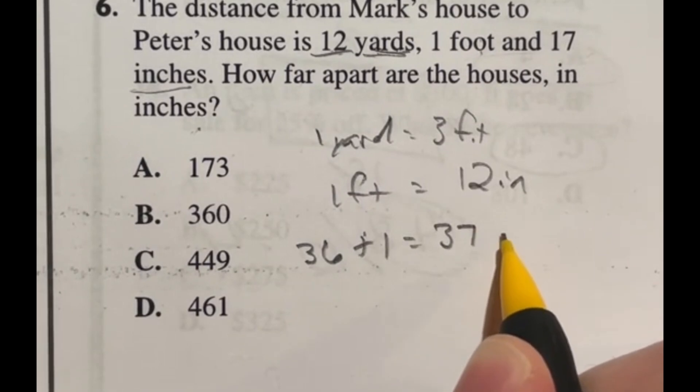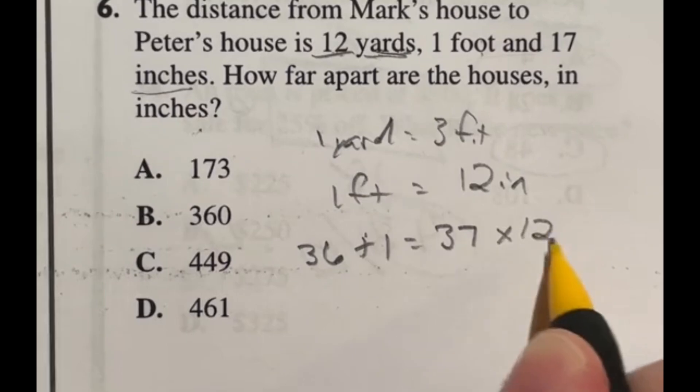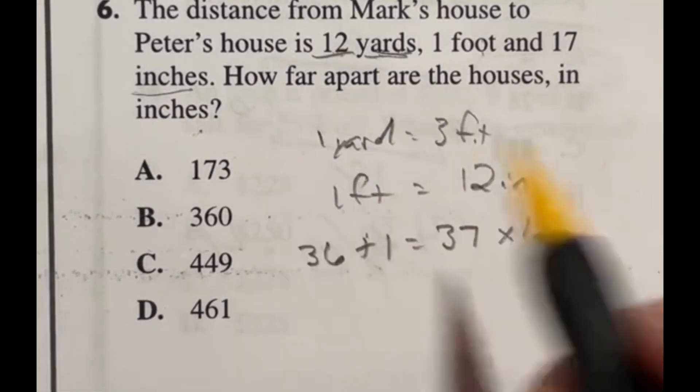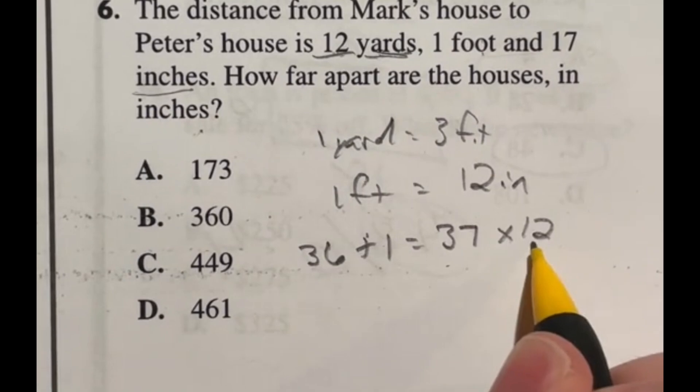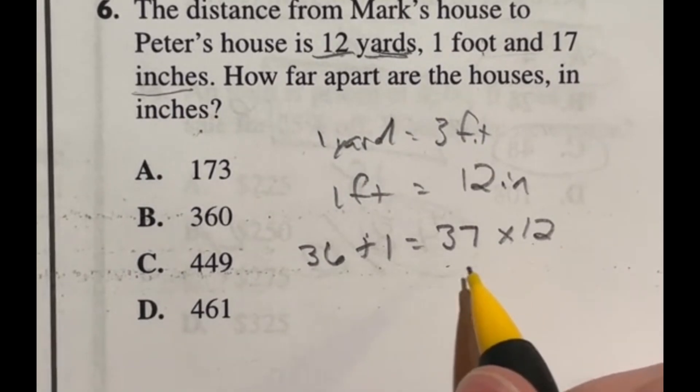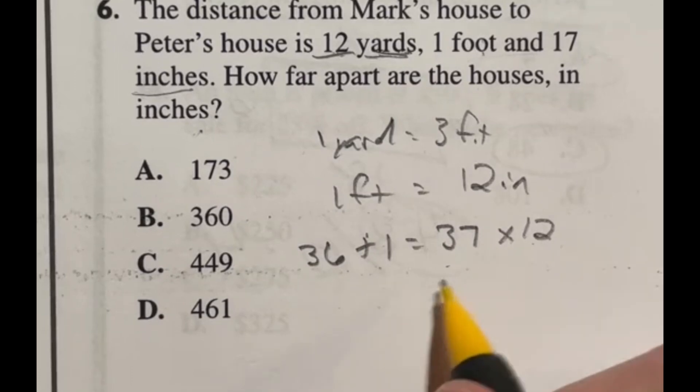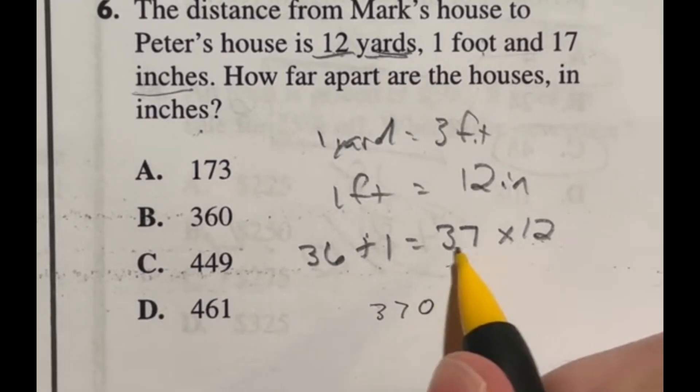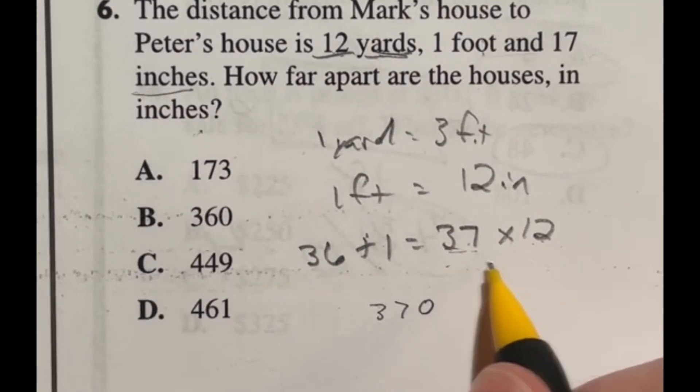Now we're going to multiply that by 12 because we have to move all of those into inches. So 37 times 12. There are lots of different ways we can do this. The quickest I think is 37 times 10 gives me 370. And then I still have two of them left. So if I double 37, that's going to give me 74.